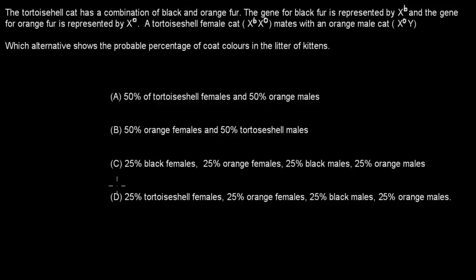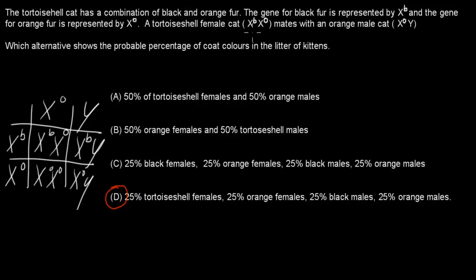Welcome back. The correct answer for this one is D. And the way we know that is because we know we have XBXO mating with XO. If we do the actual combination, we have XBXO, which is our tortoiseshell female. We have XOXO, which is our orange female. We have XBY, which is our black male. And we have XOY, which is our orange male. So each of them is a 1 to 1 to 1 to 1 ratio. So that's 25% for each. So the other ones were all wrong.